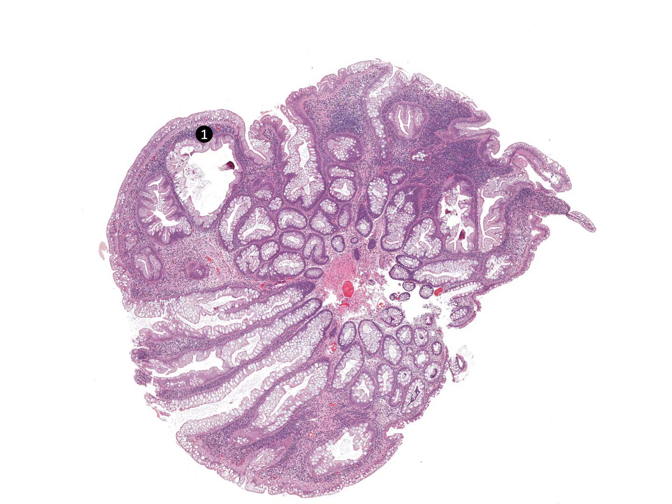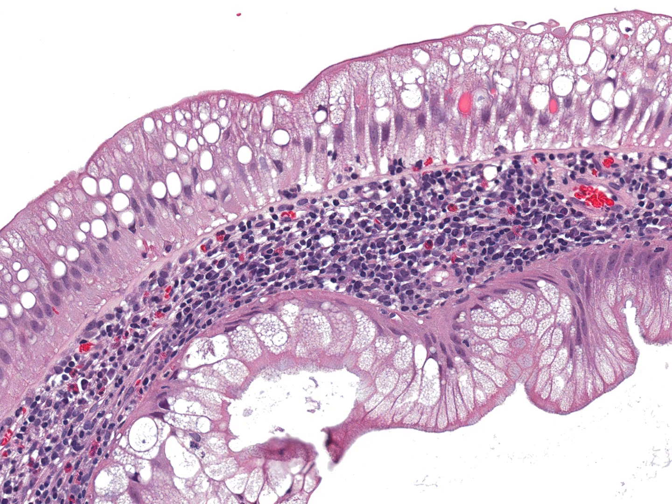Microvesicular hyperplastic polyps are a common type of serrated polyp found in the colon and rectum. They have a sawtooth or serrated architecture limited to the upper half of the crypts. Cytoplasm is abundant with fine mucin vacuoles within the epithelial cells.